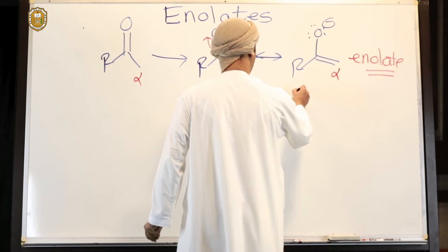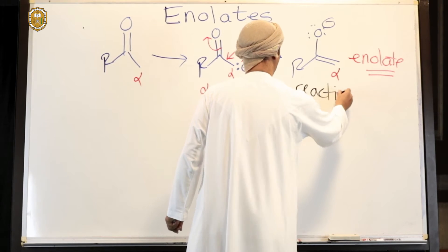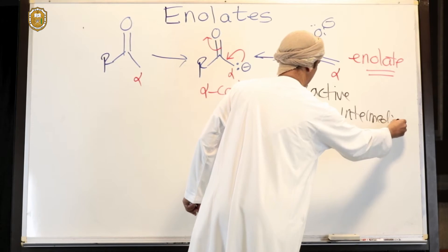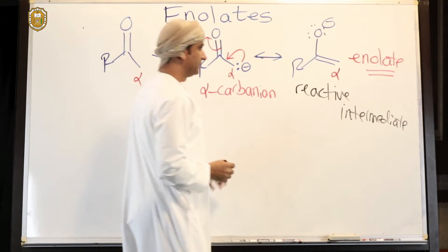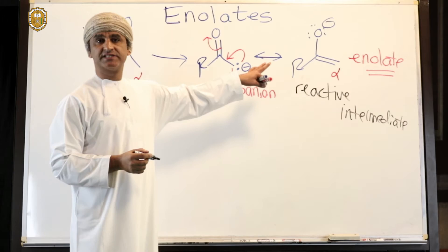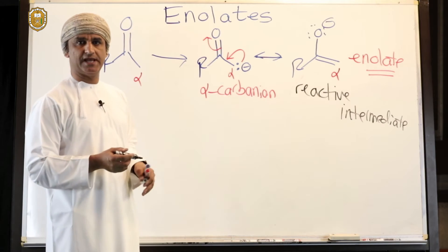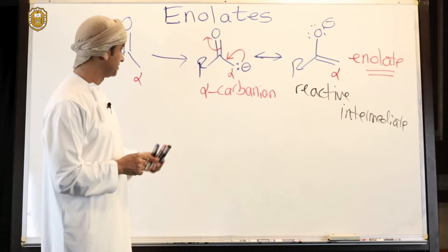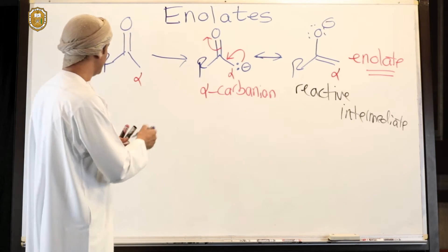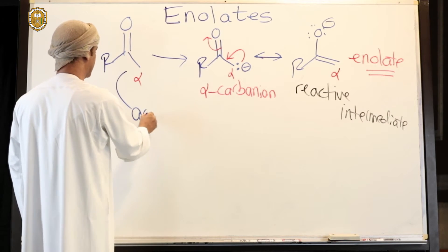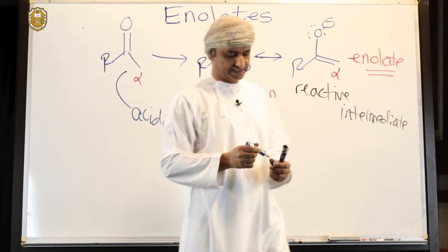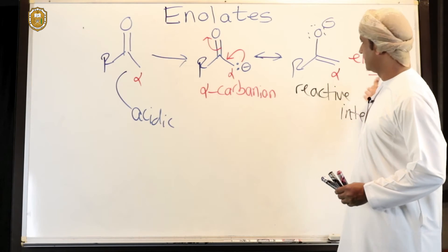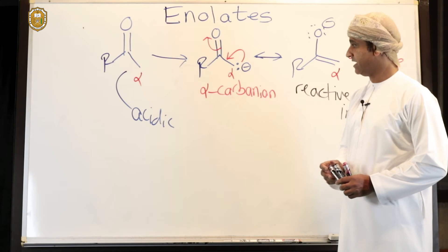This is another example of a reactive intermediate. Enolates are actually resonance forms of alpha carbanions. Alpha carbanions are made from ketones with an alpha hydrogen. Therefore, this alpha hydrogen is actually acidic because the conjugate base, which is the alpha carbanion, is stabilized by resonance to give the corresponding enolates.